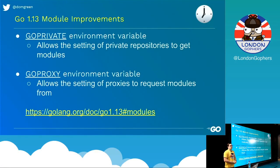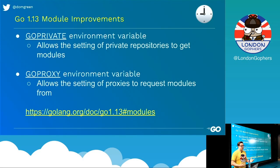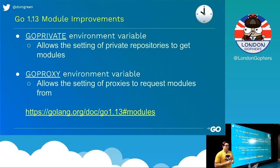So, an honorable mention of Go 1.13 before we move on to 1.14. Two things I'm going to call out: modules improvements. Lots of improvements for modules — we've got GOPRIVATE, so we'll be able to access private repos with modules, and GOPROXY, to be able to have your own proxy and therefore be able to access packages through it.